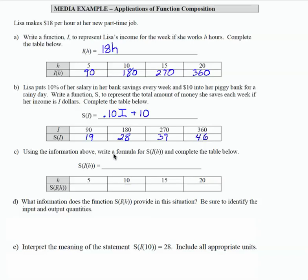So in part C, it says using the information above, write a formula for S of I of H. So this is the function composition where the savings is the outer function and the income is the inner function.